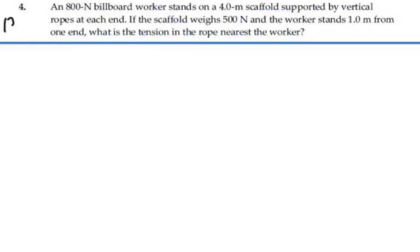Here's problem 12-4. An 800-Newton billboard worker stands on a 4-meter scaffold supported by vertical ropes at each end. If the scaffold weighs 500 Newtons and the worker stands 1 meter from one end, what is the tension in the rope nearest the worker?